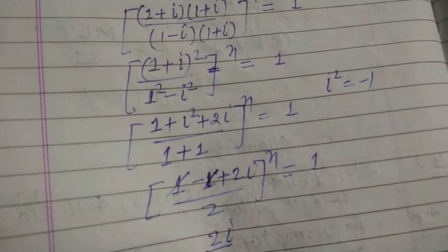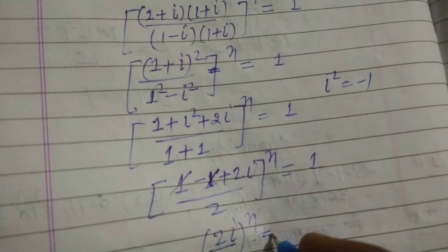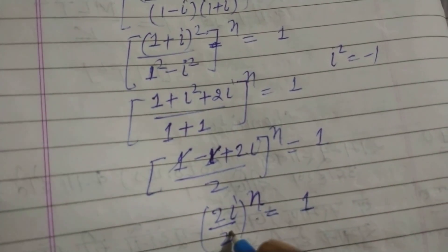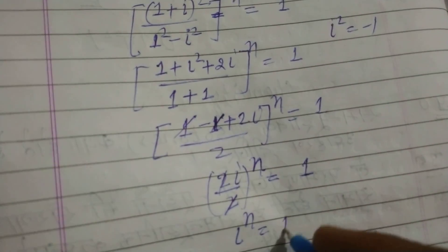So 2 iota over 2 to the power n equal to 1, and iota to the power n equal to 1.